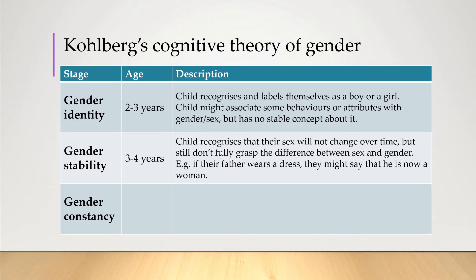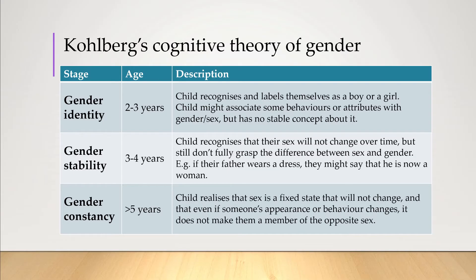At three to four years of age, Kohlberg suggests the child goes through gender stability, where they start to recognize that their sex will not change over time, but they still don't fully grasp the difference between sex and gender — for example, if their dad suddenly wore a dress, they might say he is now a woman. From about five years of age onwards, children reach gender constancy, realizing that sex is a fixed state that won't change, even if someone's appearance or behavior changes. It's a remarkably insightful observation and actually a fun thing to try out with little siblings or cousins around these ages.